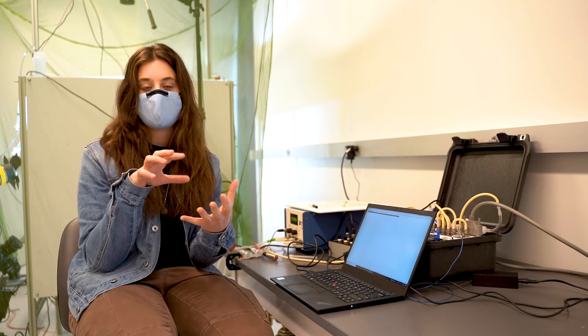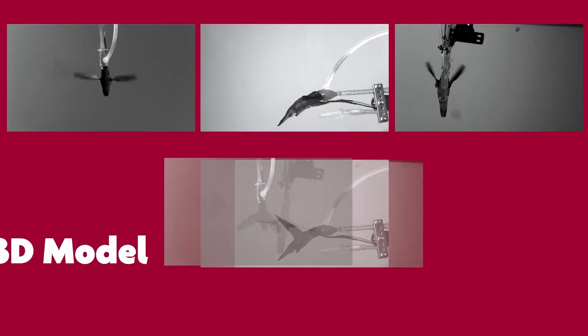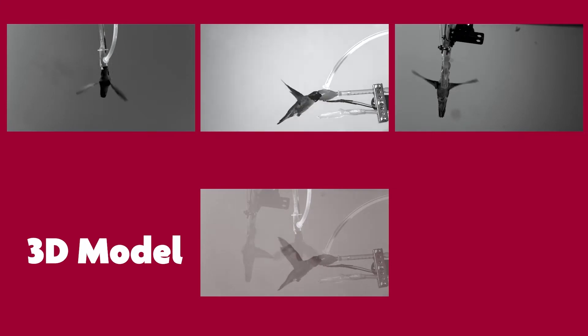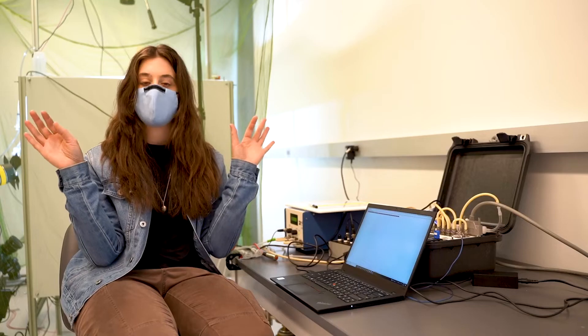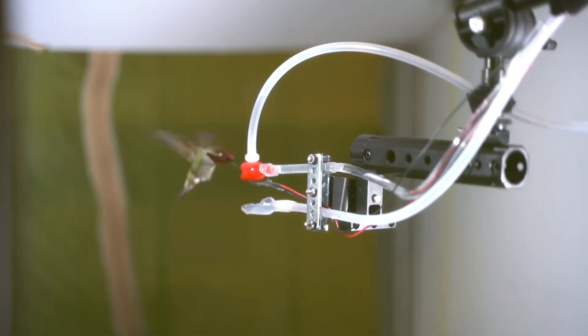So those three camera shots are going to get calibrated to create this sort of 3D space so that we can see when the wings of the hummingbird are moving, where they're moving, how far they're moving back, what type of figure eight pattern looks like, and how it changes depending on if they're hovering versus moving away from the feeder versus approaching the feeder.